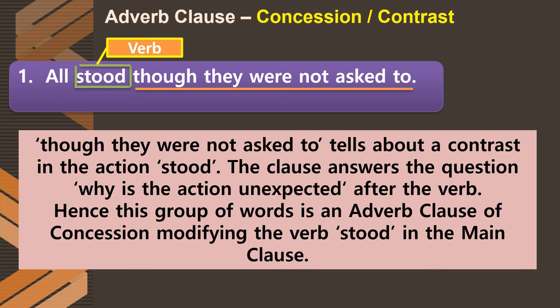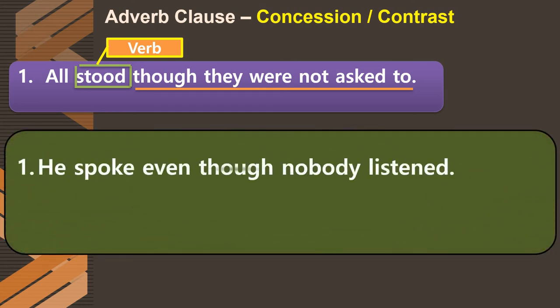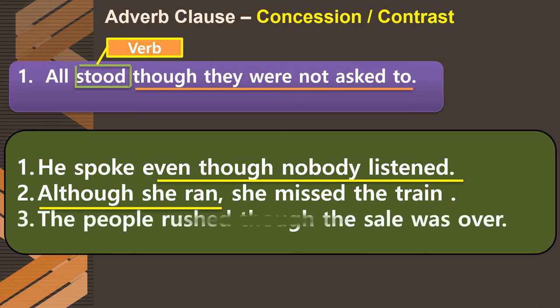Examples of adverb clauses of concession: First, 'He spoke even though nobody listened' — the contrast is he spoke, but nobody listened. Second, 'Although she ran, she missed the train' — she ran but still missed the train. Third, 'The people rushed though the sale was over' — 'though the sale was over' is an adverb clause of concession modifying the verb 'rushed' in the main clause. Keywords 'though' and 'although' signal concession.